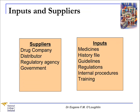Then we take a look at steps four and five. In step four, we look at the inputs: medicines themselves, the patient history file, guidelines and regulations for dispensing medicines, internal procedures, and training for the people involved. Step five — the suppliers of these inputs are the drug company, distributors, a regulatory agency supplying guidelines and regulations, and government, which provides laws, regulations, and information about payments and support for public health patients.